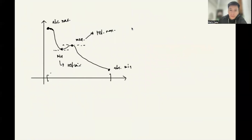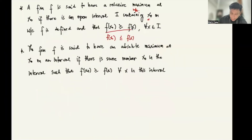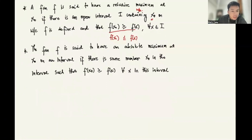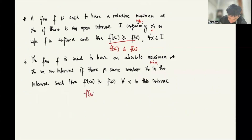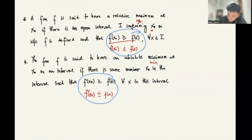Here is the formal definition: a function f is said to have an absolute maximum at x₀ on an interval if there is some number x₀ in the interval such that f(x₀) is greater than or equal to f(x) for all x in the interval. The counterpart definition applies for the absolute minimum.